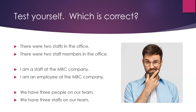Test yourself — which is correct? Option A: 'There were two staffs in the office.' Option B: 'There were two staff members in the office.' Option C: 'I am a staff at the MBC company.' Option D: 'I am an employee at the MBC company.' Option E: 'We have three people on our team.' Option F: 'We have three staffs on our team.'